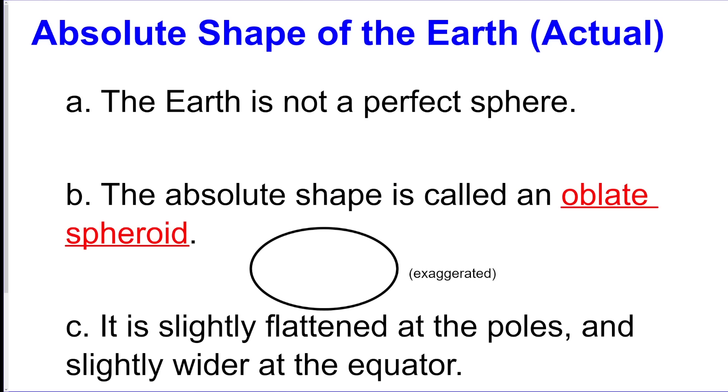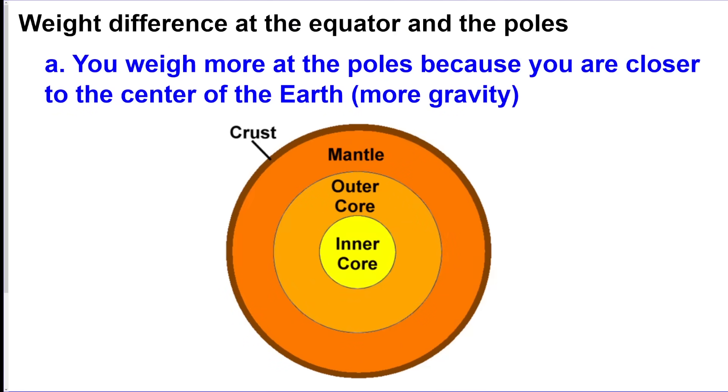All right, first off, the Earth is not a perfect sphere. It is an oblate spheroid, so it looks wider than it is tall in my little exaggerated picture here. But you cannot tell on a real globe that this is the case. It's barely wider, so this is very exaggerated. You will not see the Earth like this. It looks like a perfect sphere to us, but it's really not. Since it is wider at the equator than the poles, you're going to weigh more at the poles because you're closer to the inner core.